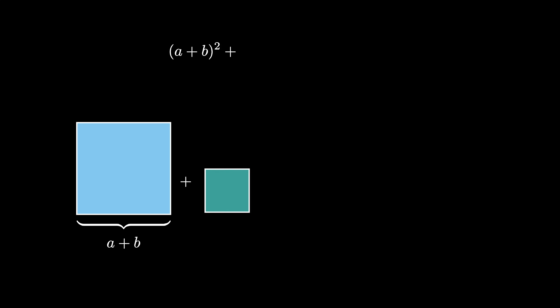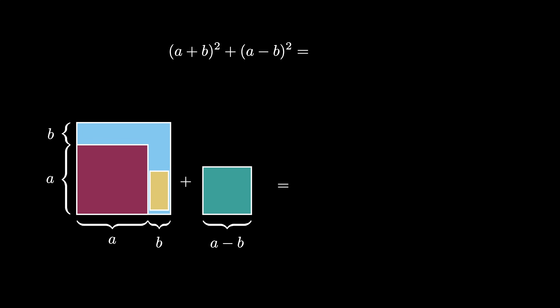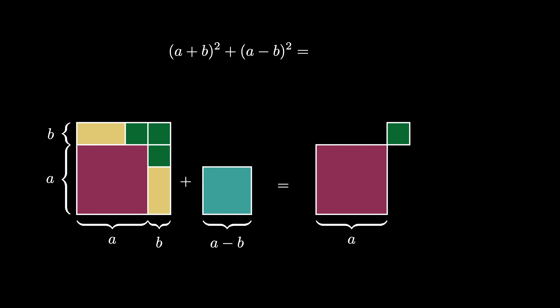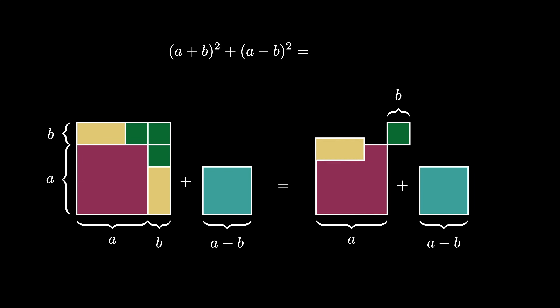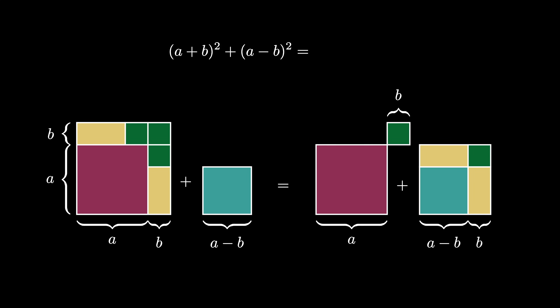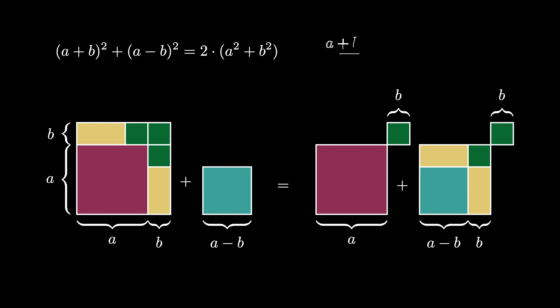Another example: start with an (a+b) by (a+b) square of area (a+b)², along with an (a−b) by (a−b) square of area (a−b)². Breaking the first square into six regions — an a by a square, two b by (a−b) rectangles, and three b by b squares — and rearranging them shows the same total area equals two copies of an a by a square and two copies of a b by b square. Thus (a+b)² + (a−b)² = 2(a² + b²). Since (a−b)² ≥ 0, we get (a+b)/2 ≤ √((a²+b²)/2) — the two-term arithmetic mean–root mean square inequality, with equality when a = b.